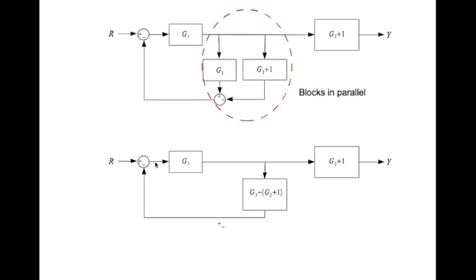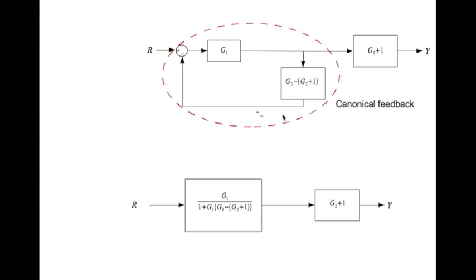Now if you look at this region this one right here. What does that look like? That looks like a canonical feedback. G divided by 1 plus G H.